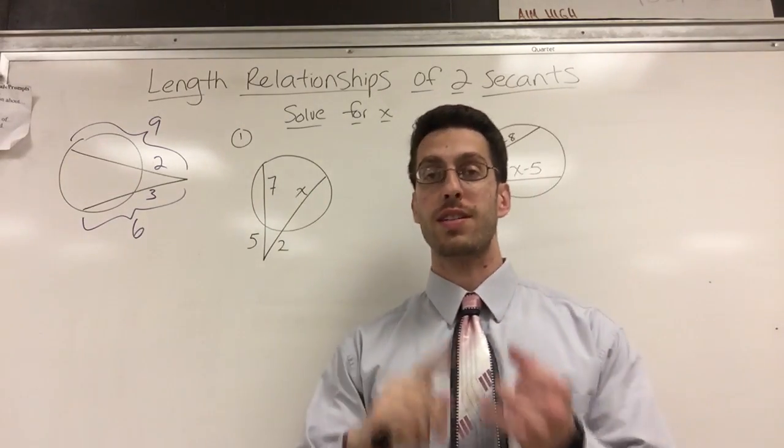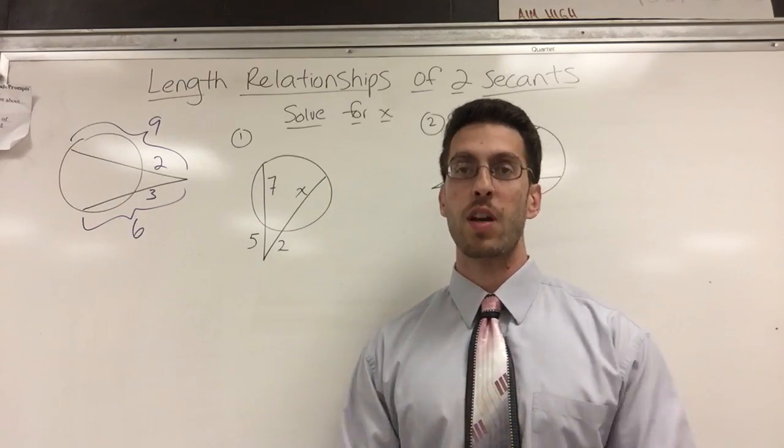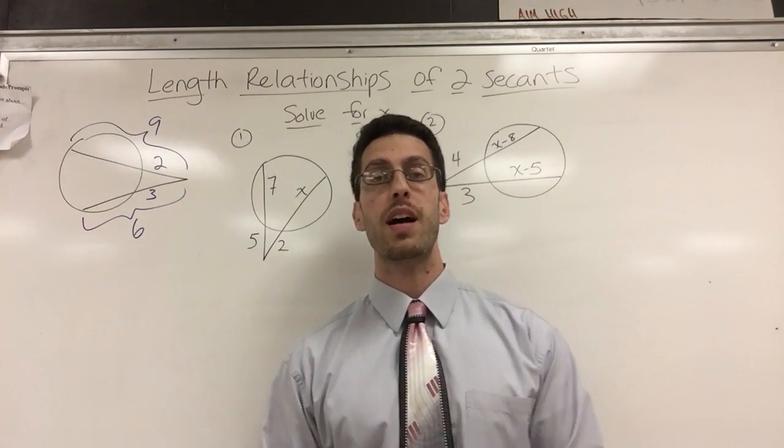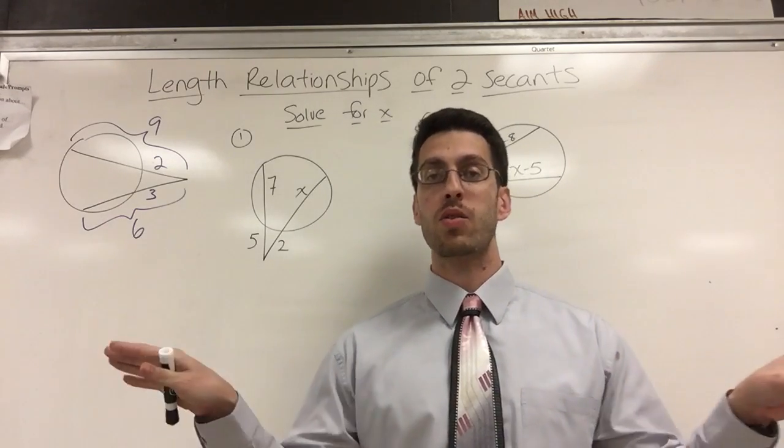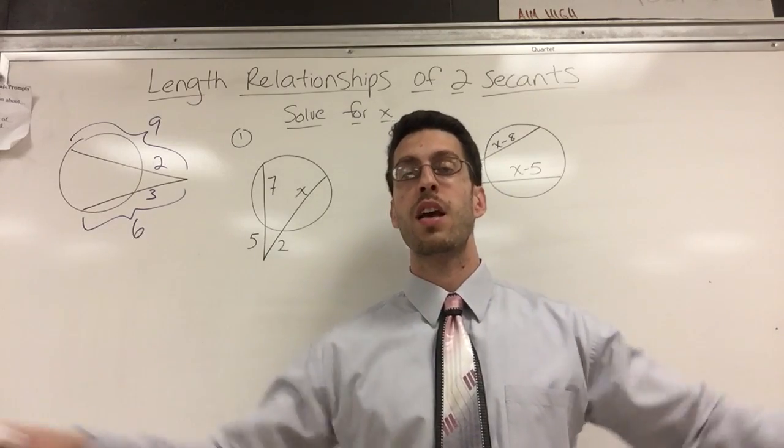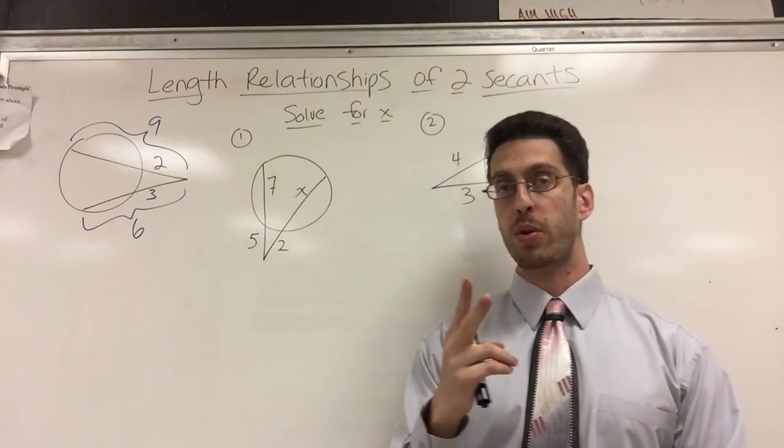So obviously you're looking at a circle and then you see some lines. You've got to know if the lines are tangent lines, chords, or secants. So a secant is defined as a line, and a line goes on forever, as a line that passes through a circle intersecting it in two points.